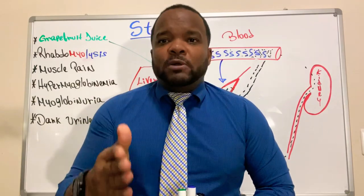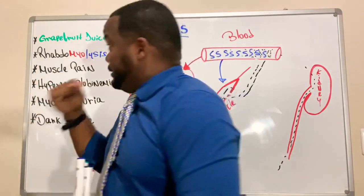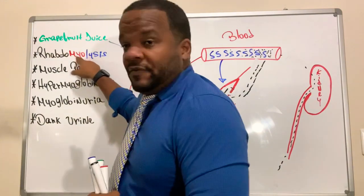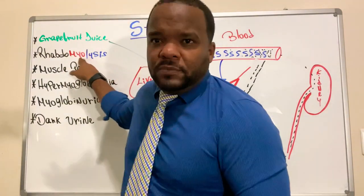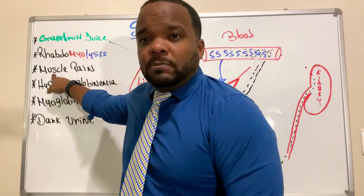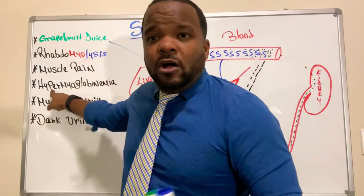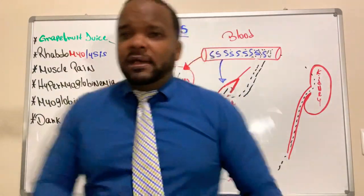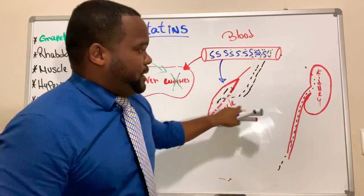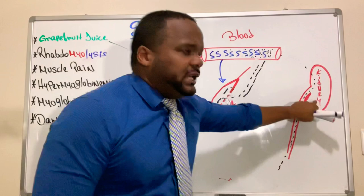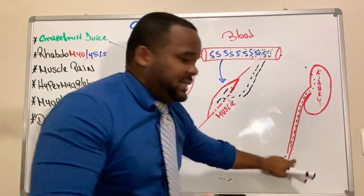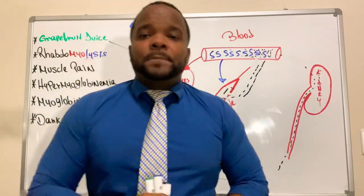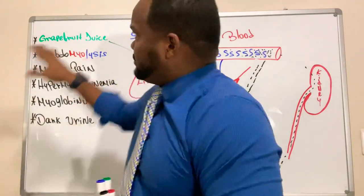So now you understand why the patient develops rhabdomyolysis caused by grapefruit juice. Rhabdomyolysis causes muscle pain, hypermyoglobinemia due to muscle fiber destruction, myoglobin leaking into the bloodstream, the kidneys attempting to remove the excess, and ultimately dark urine. Those are the symptoms of statin toxicity caused by grapefruit juice.